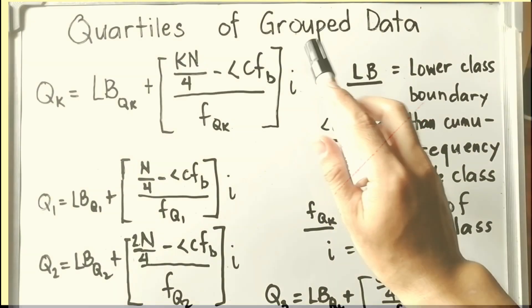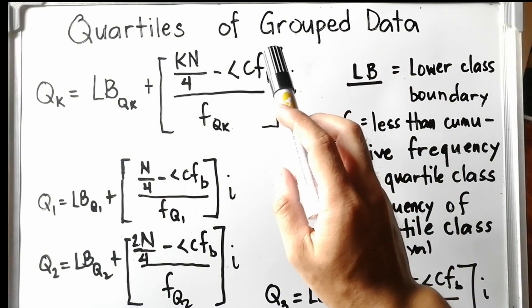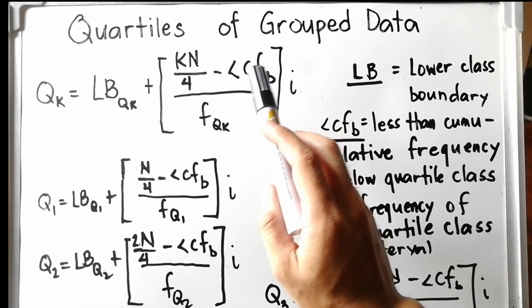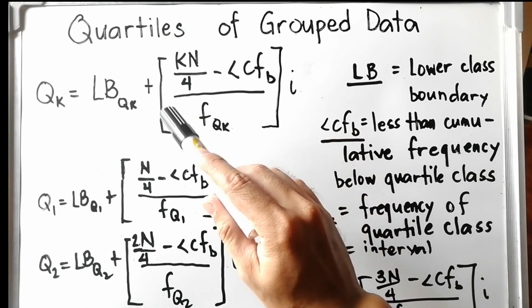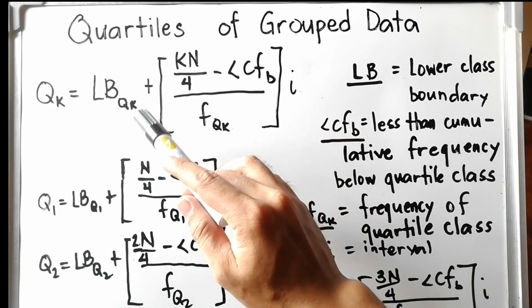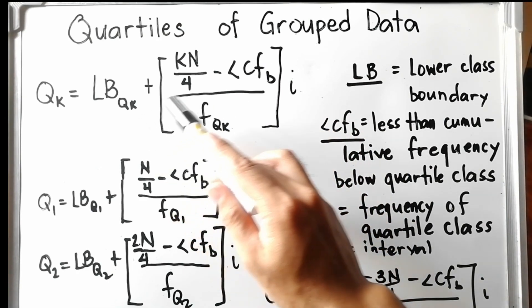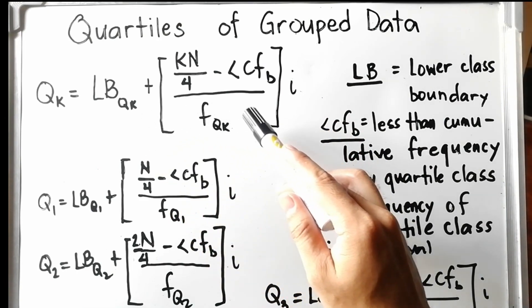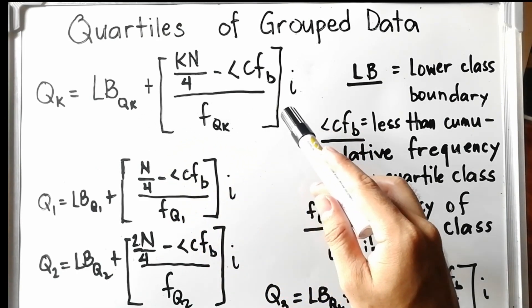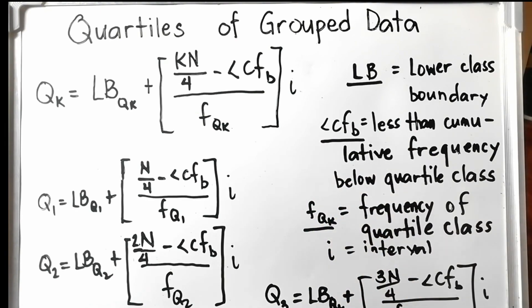Hi everyone! Welcome back to my YouTube channel. Today we will talk about quartiles of grouped data. For grouped data, quartiles are computed the same way as the median — that is the sum of the lower class boundary and the fractional part of the class interval size.